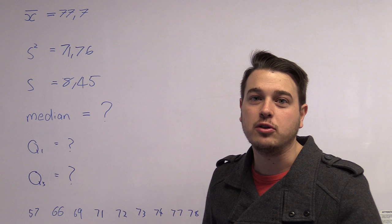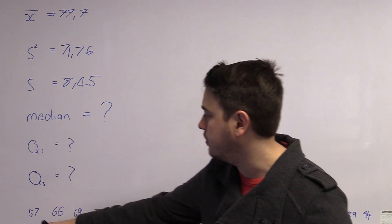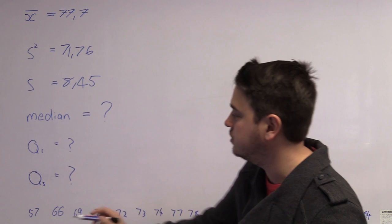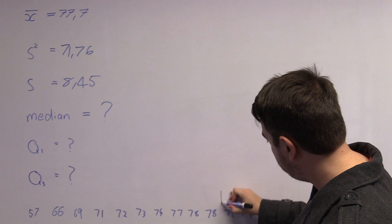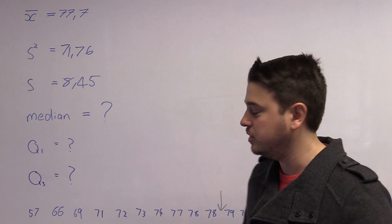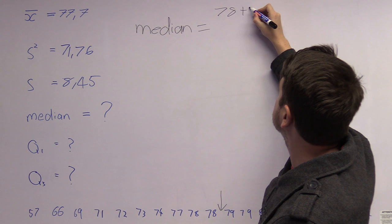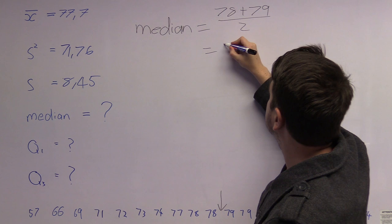The fourth part is to calculate the median. To calculate the median, we arrange our numbers from low to high, and the median is the number that splits our list in half. This list has 20 numbers, so we count to position 10. Somewhere between the 10th and 11th values — between 78 and 79 — is our median. We take the average of these two numbers: (78 plus 79) divided by 2, which gives us 78.5.